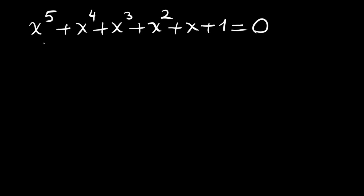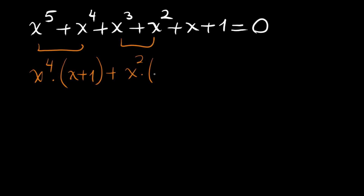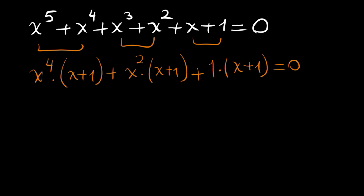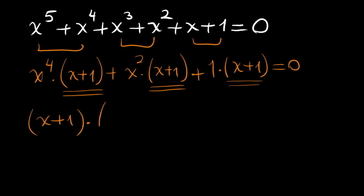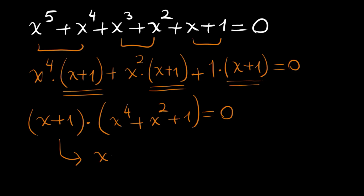Let's group our terms. The first two can be grouped as x to the 4 times x plus 1, the second two can be written as x squared times x plus 1, and the last one is just 1 times x plus 1. This is equal to 0. Since we have x plus 1 as a common factor, let's factor again: x plus 1 times x to the 4 plus x squared plus 1 equals 0.